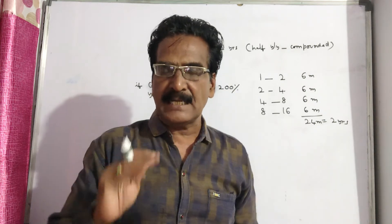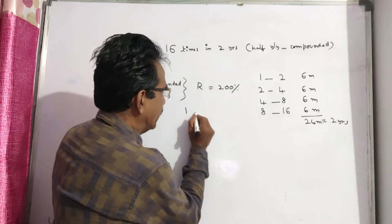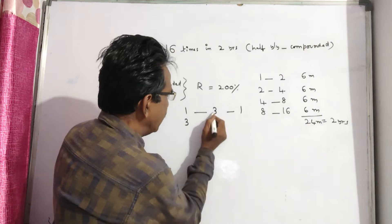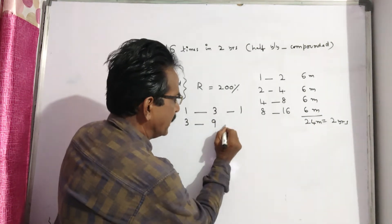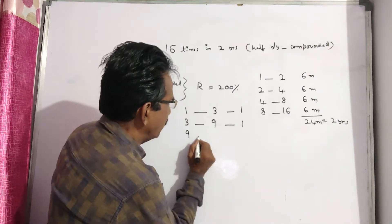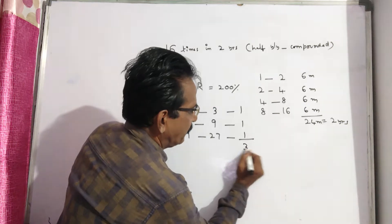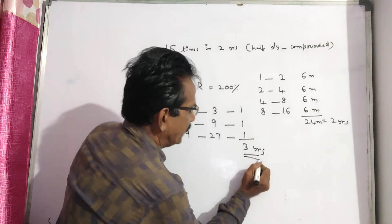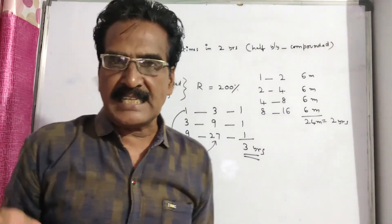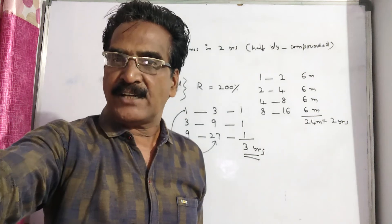So, 1 becomes 3 in 1 year, 3 becomes 9 in another 1 year, and 9 becomes 27 in another 1 year. That means in a span of 3 years, 1 becomes 27. So the amount becomes 27 times in 3 years if compounded annually.